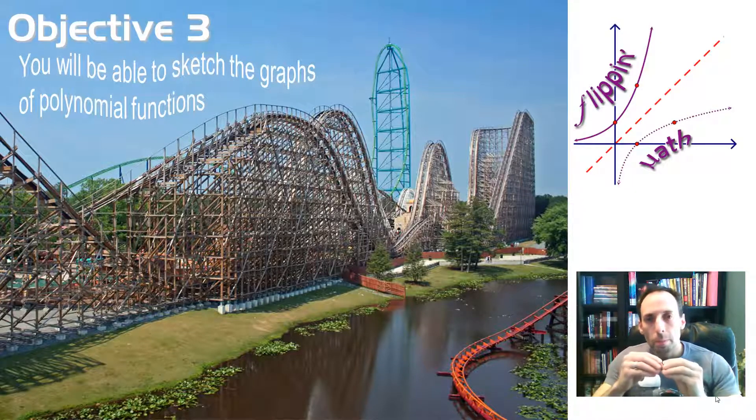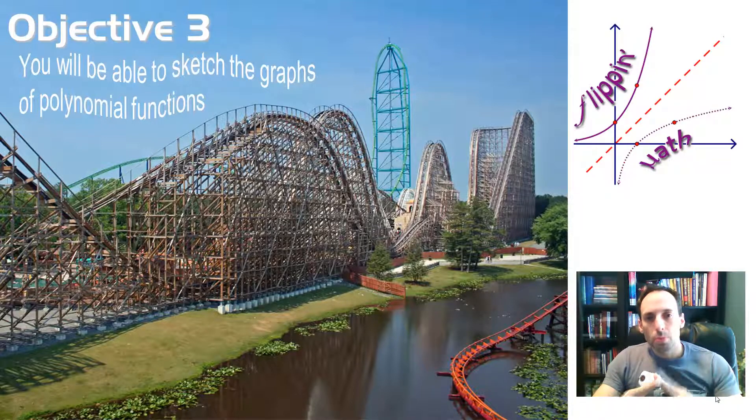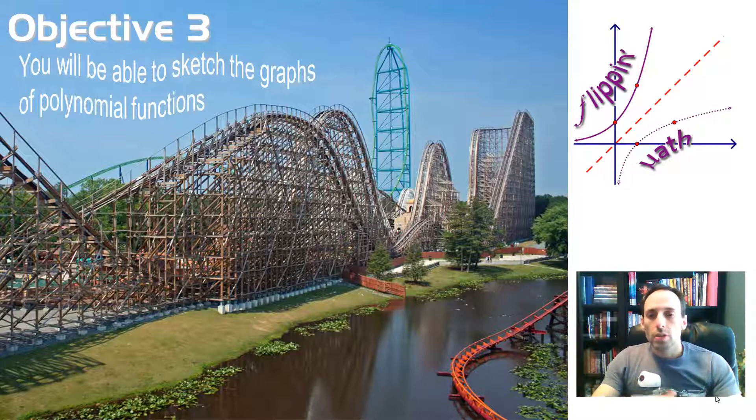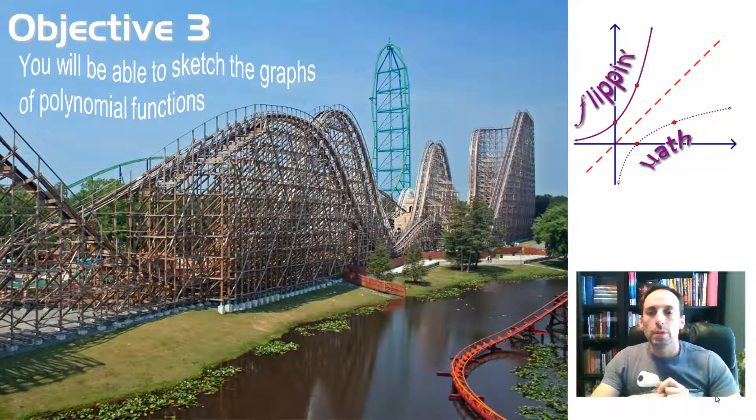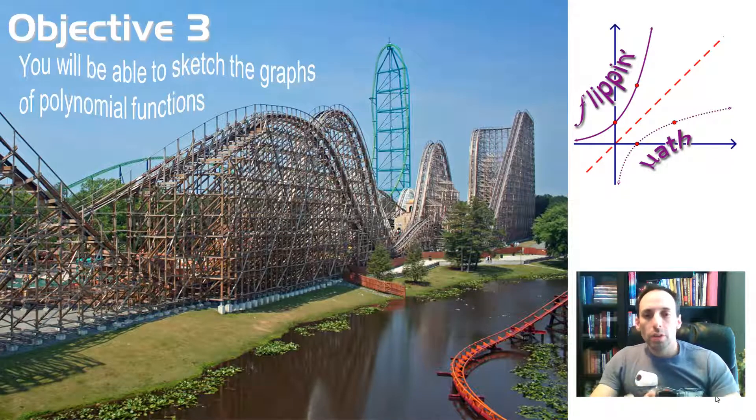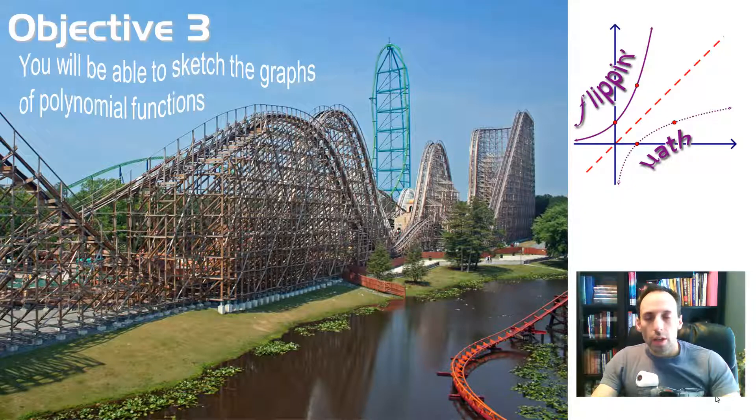We're not looking for complete accuracy here because we don't really know where those min and max points are going to be without some calculus. So we're just going to kind of approximate those looking for end behavior. We're looking for the x-intercepts and the y-intercepts, and then how does that graph thread through those points. So on each one of these problems, we're going to sketch it out ourselves, and then we'll look at the actual picture and compare those two.